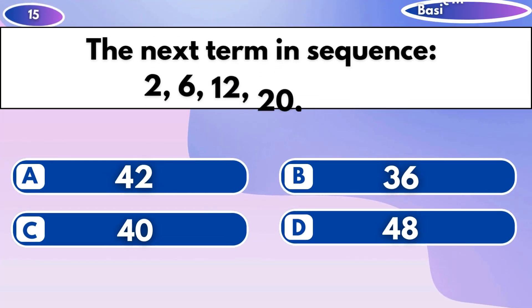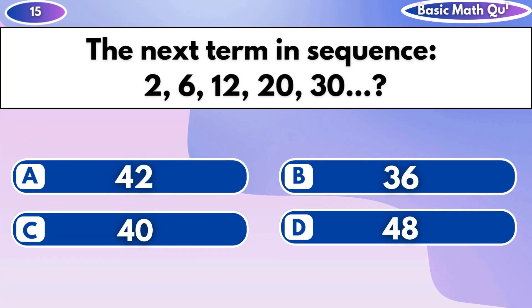What is the next term in the sequence: 1, 2, 6, 12, 20, 30?